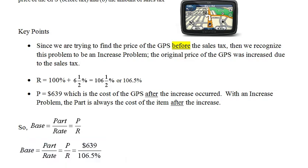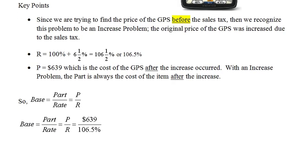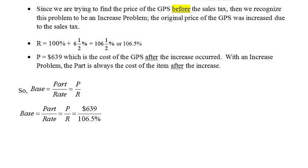So then, substituting in the values that we now know, the part is $639 and the rate is 106.5%. Of course, any time we do a computation involving a percent, we must convert that percentage to a decimal. So 106.5% as a decimal becomes 1.065. When we do the arithmetic, we see that the base, or the cost of the GPS before the increase, is $600.